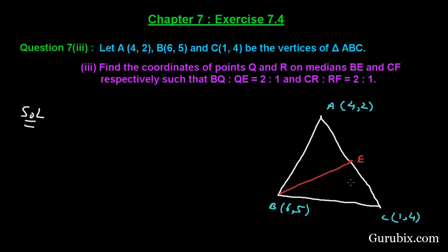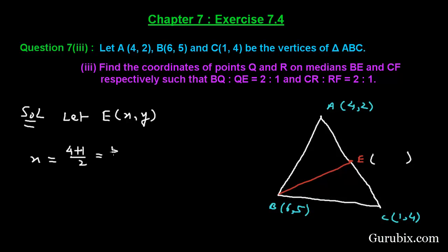Let us find the coordinates of point E, and let the coordinates of E be (x, y). Therefore, the x-coordinate of point E will be (4 + 1) over 2, which means 5 over 2. And the y-coordinate will be (2 + 4) over 2, which means 6 over 2, which means 3. So E is at (5/2, 3).